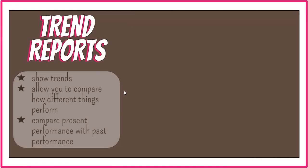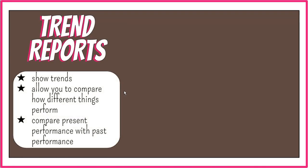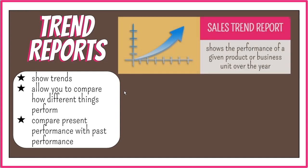The next type is the trend report. This simply shows trends, which allow you to compare how different things perform, and they also enable you to compare present performance with past performance. For example, a trend report of sales shows the performance of a given product or business unit over the year, broken down into months, weeks, and days.